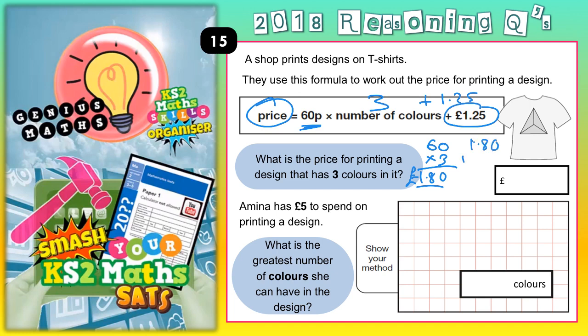So £1.80 add on £1.25. Nothing and 5 is 5, 8 and 2 is 10 — put the 0 and carry the 1, 1 plus 1 plus 1 is 3. So three colours, three lots of 60p is £1.80. Add on your £1.25 is £3.05. So a design with three colours would cost £3.05.